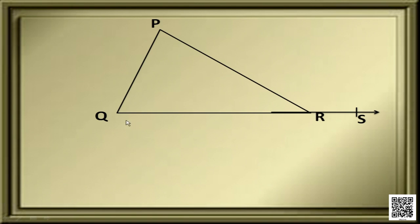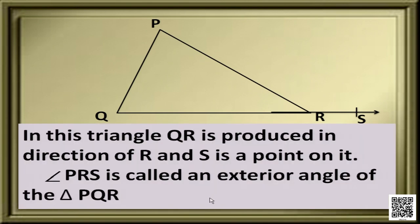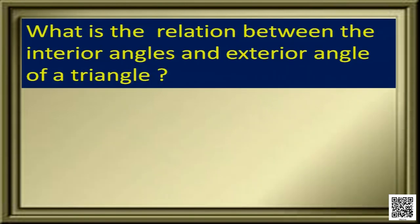Here, angle PRS is adjacent to the exterior angle. And we have two other angles which are not adjacent. Those angles are called opposite angles or interior opposite angles of the triangle with respect to the exterior angle PRS. So we can say that when triangle QR is produced in the direction of R and S is a point on it, angle PRS is called an exterior angle of triangle PQR. Then, what is the relation between the interior angles and the exterior angles of a triangle?